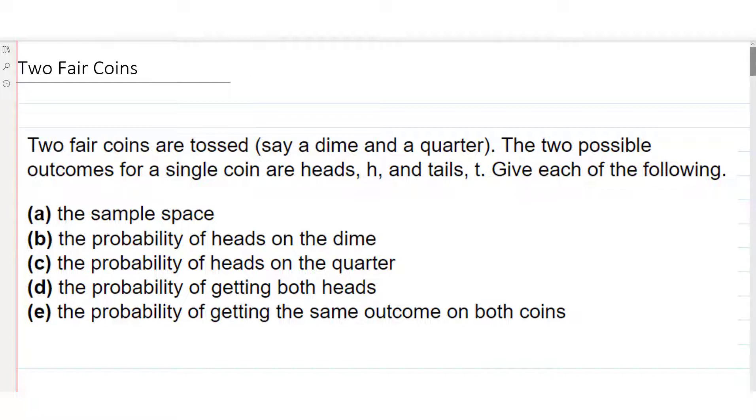The problem that we're looking at says two fair coins are tossed, say a dime and a quarter, although that doesn't really matter. The two possible outcomes for a single coin are heads, H, and tails, T. Give each of the following.